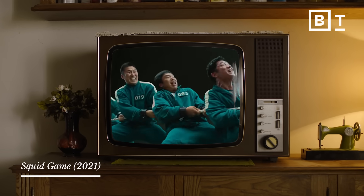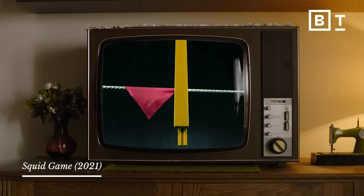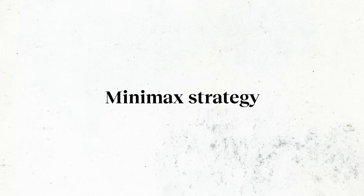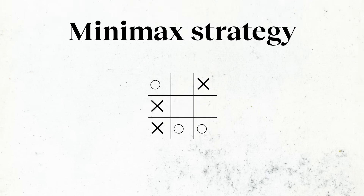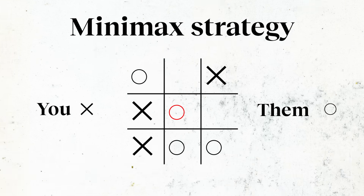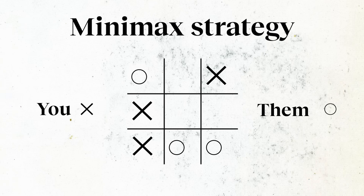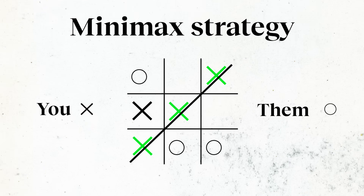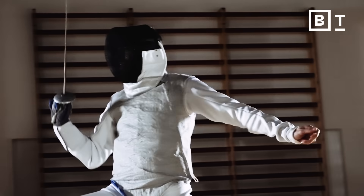Game theory spent much of its early days analyzing zero-sum games where one party is going to win and the other is going to lose, and trying to figure out the best strategy. What game theorists have figured out is that in zero-sum games, the best strategy against a sophisticated opponent is to adopt the strategy which minimizes your maximum loss. This is sometimes called the mini-max strategy — you think, what's the worst case scenario for me, what could my opponent do to make me worse off, and then figure out the best strategy against that.